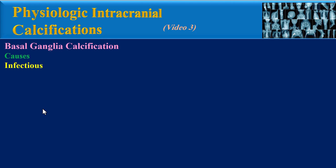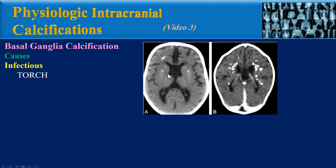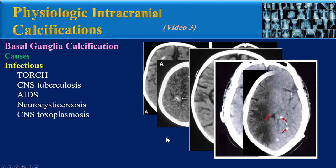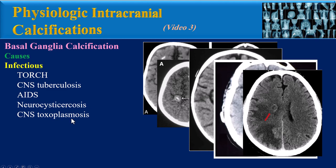The infectious causes of basal ganglia calcification include TORCH syndrome, with basal ganglia and periventricular calcifications, CNS tuberculosis, and AIDS. This axial CT brain image shows bilateral ganglia calcification and cerebral shrinkage in a one-year-old child with HIV infection. Another infectious cause is neurocysticercosis. CNS toxoplasmosis, as we know, is a component of TORCH syndrome and shows famous ring-like lesions.